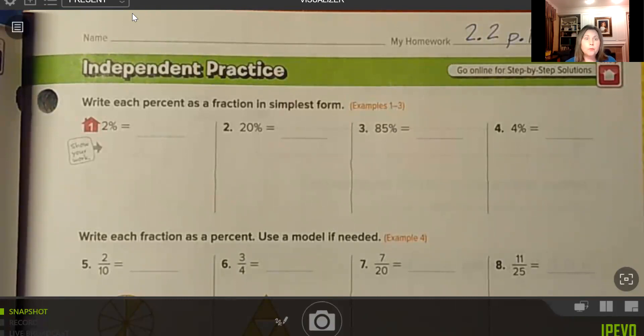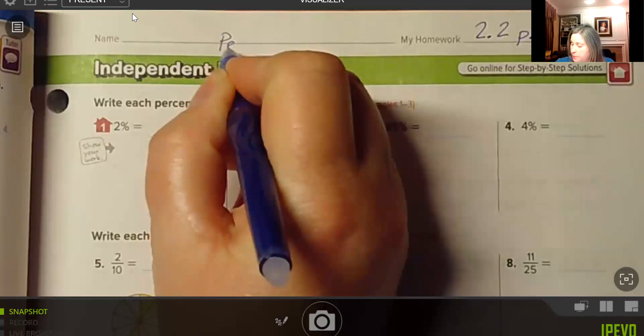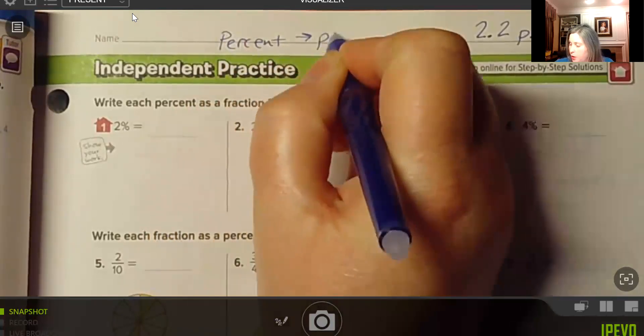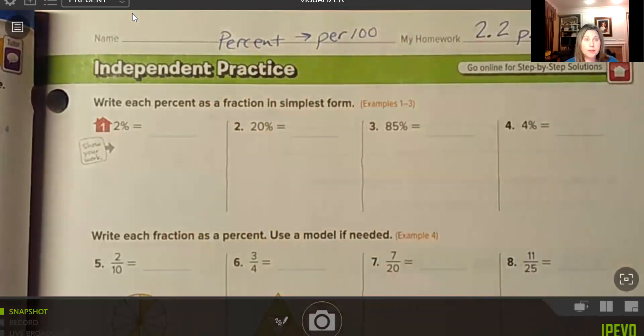Numbers 1 through 4, write each percent as a fraction in simplest form. So we have 2% and we know that 2% means 2 per hundred. So the percent means per 100. Centi means 100, like there are 100 centimeters in a meter, 100 cents in a dollar, 100 years in a century. So percent means per hundred.